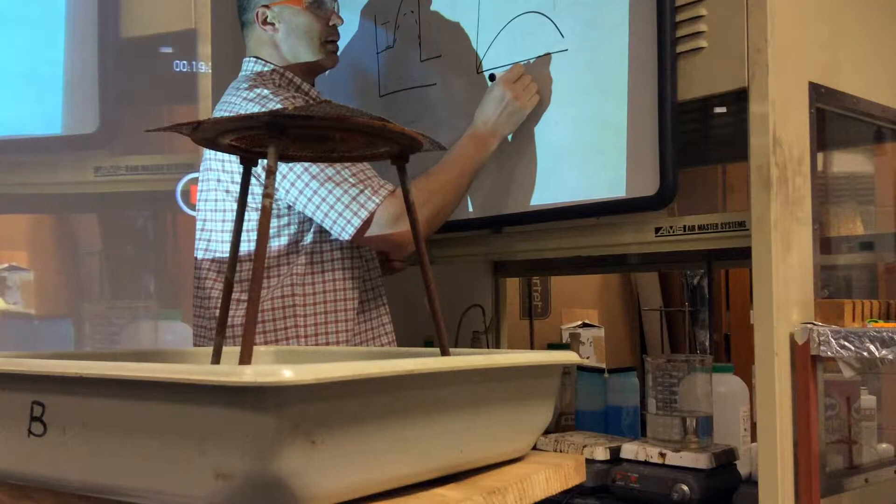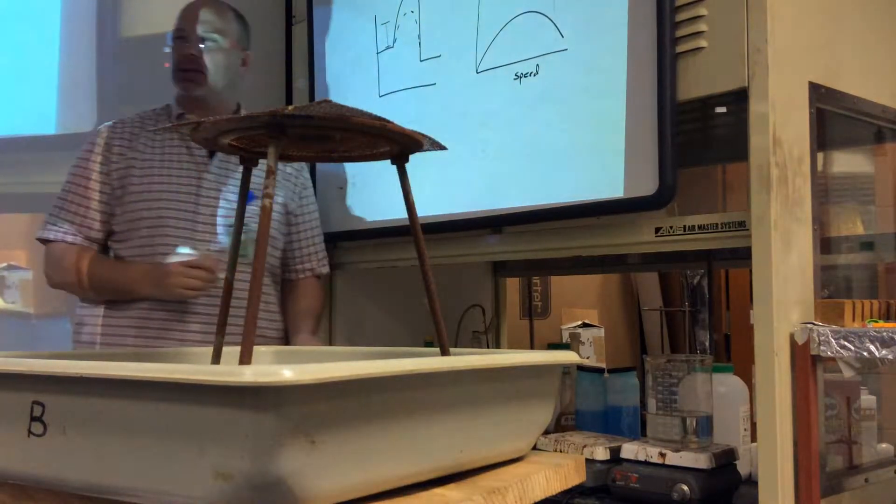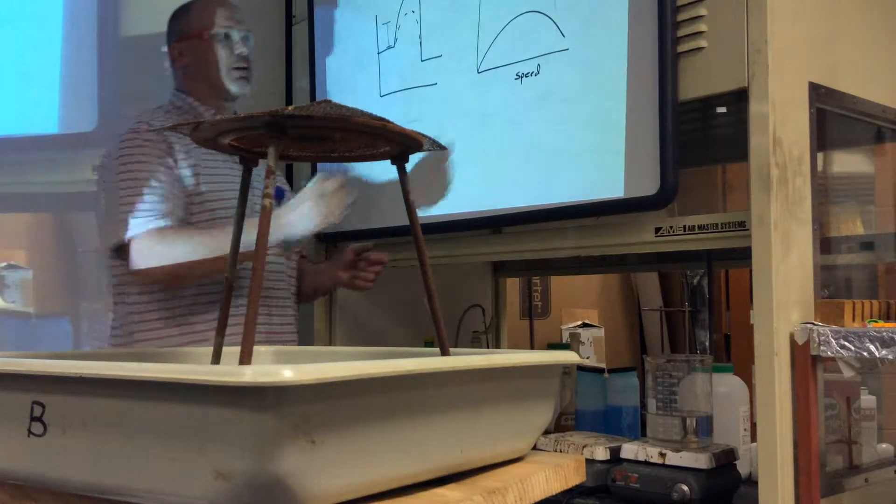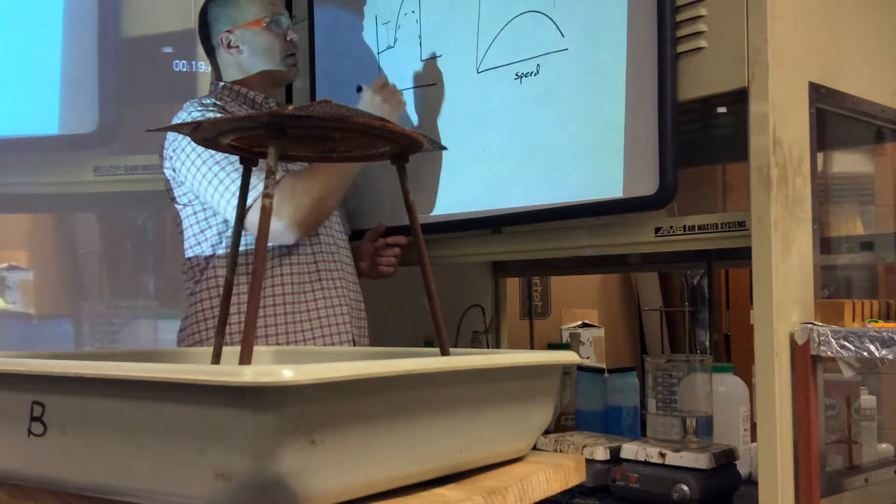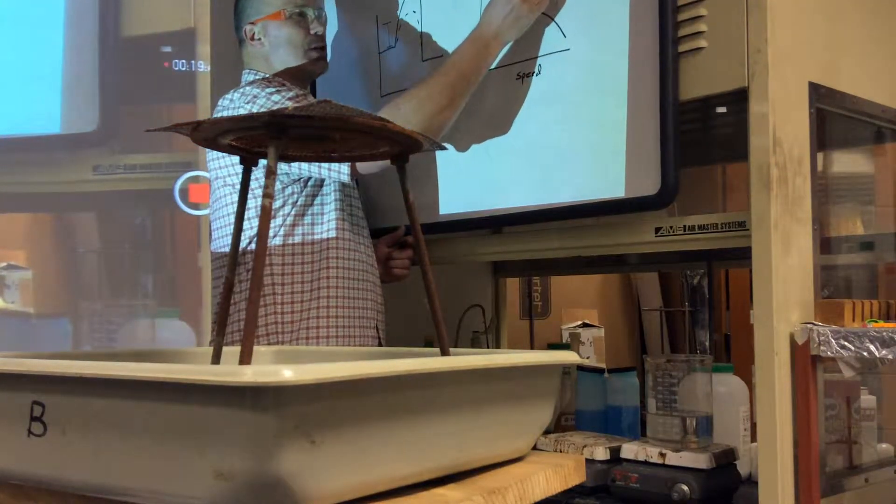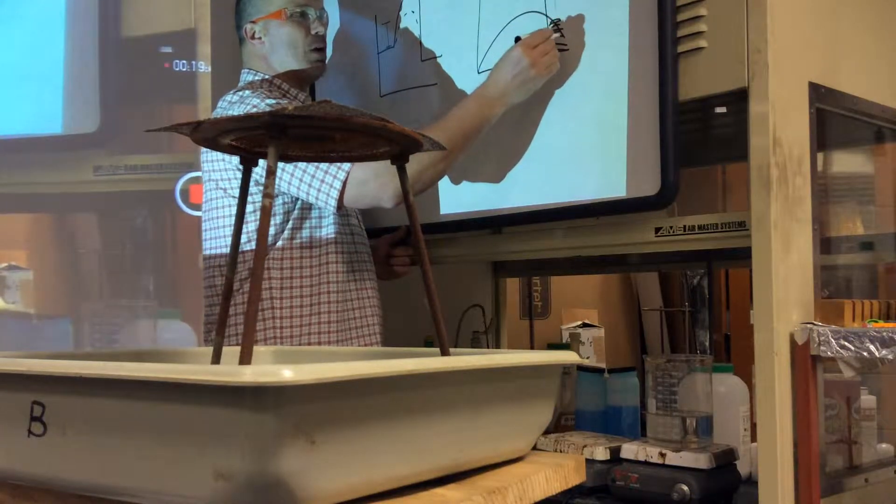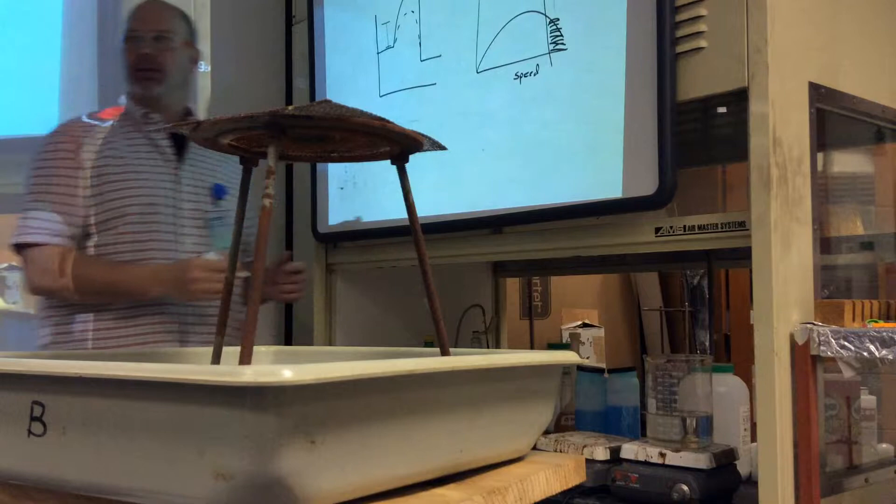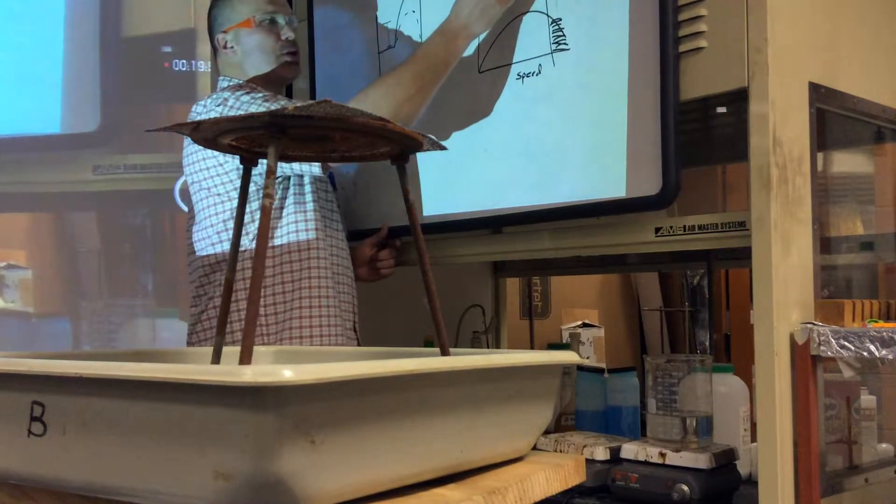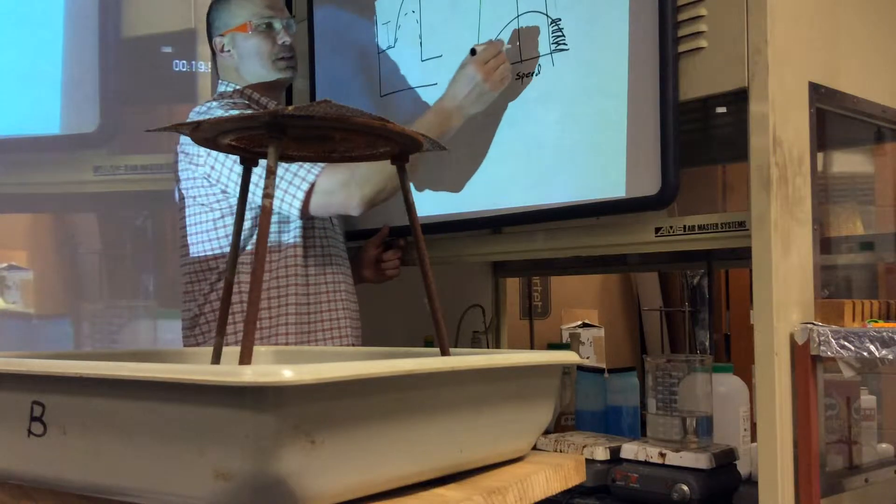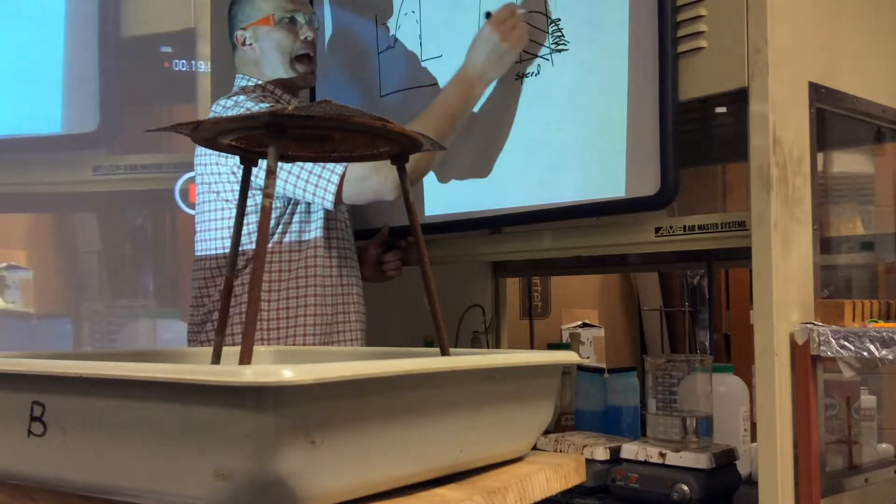If my activation energy represents all the molecules who can exist at this speed, only few of them can react. But if I lower the threshold, the activation energy to lower speeds, more of them can react. Now more molecules have the energy to collide.